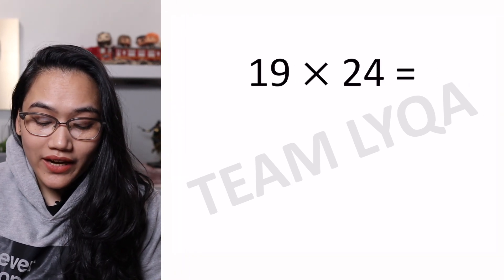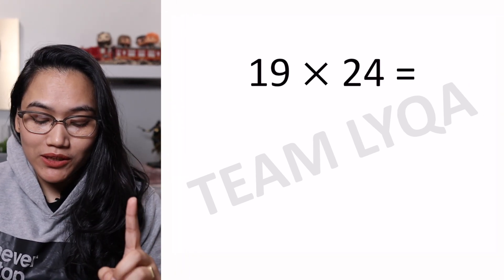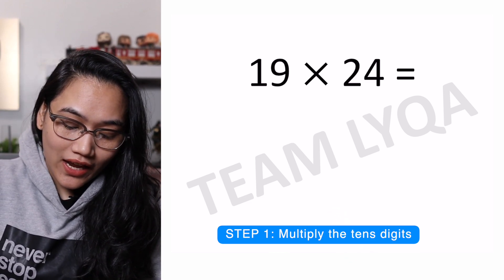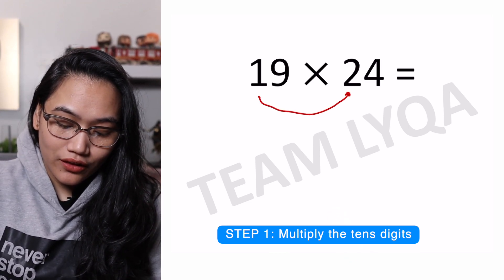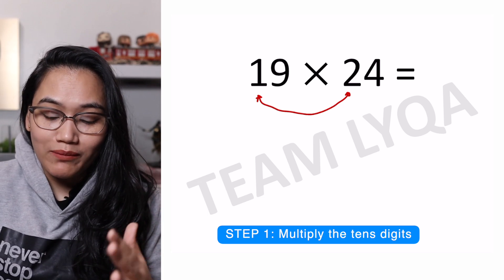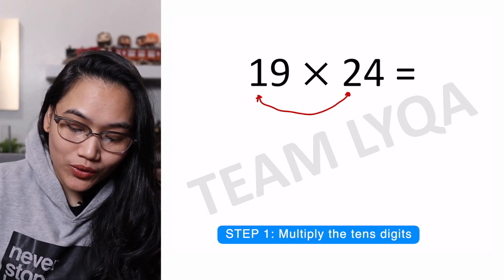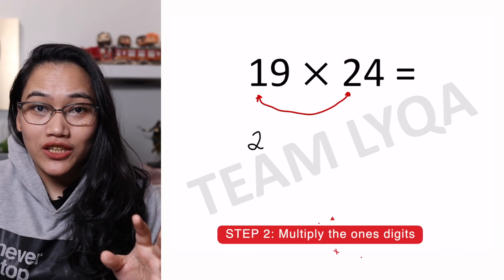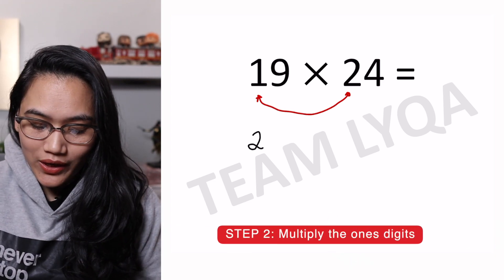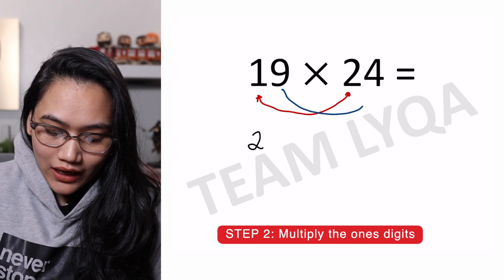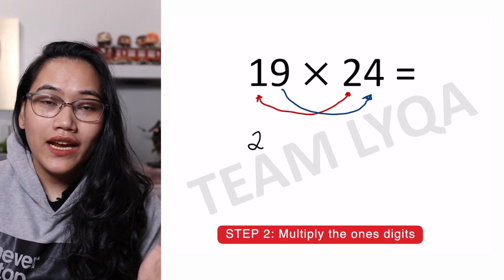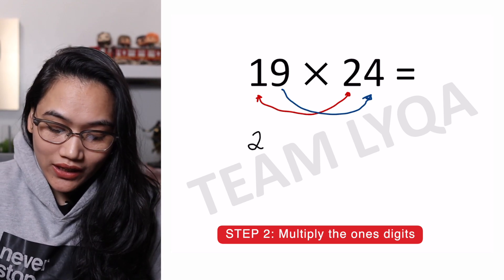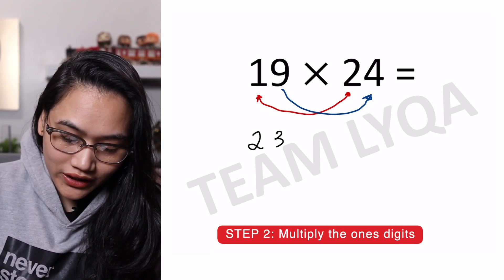Alright, let's try it out with this: 19 times 24. The first step is to multiply the first digit — the tens digit. So we have 1 times 2, which is 2. We'll write that down. Next, we're going to multiply the ones digits of both numbers, the last digits. So we have 9 times 4, which is 36. We write that next to the 2, giving us 236.